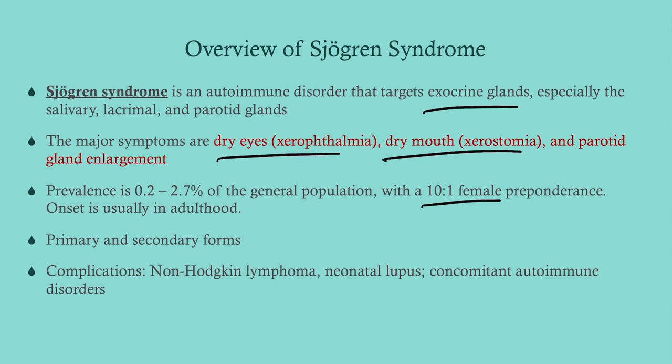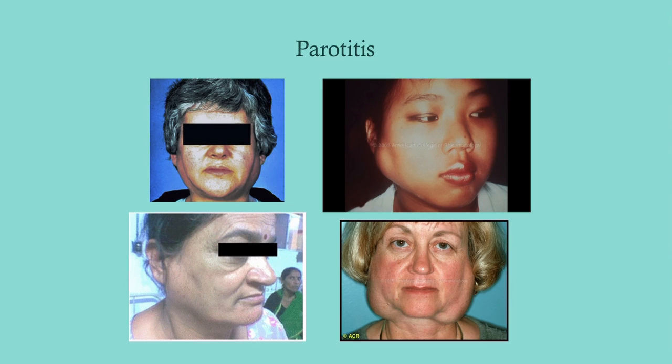The main complications are malignancy — specifically non-Hodgkin's lymphoma like a MALT lymphoma — and neonatal lupus. The neonatal lupus risk is due to a strong association with the anti-Ro antibody, so if these patients are pregnant we need to be very careful.